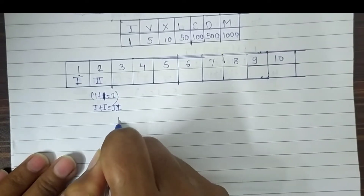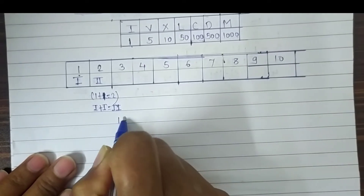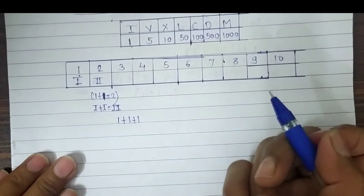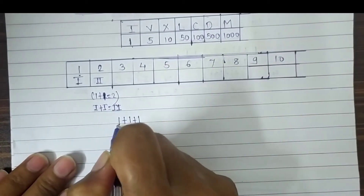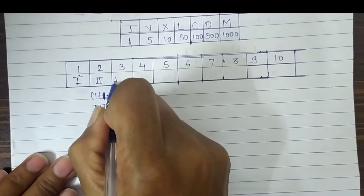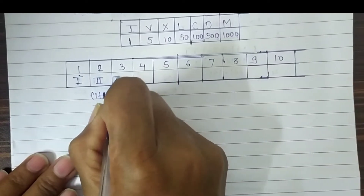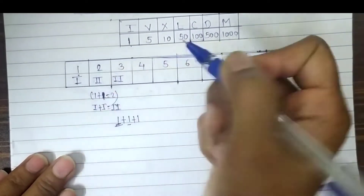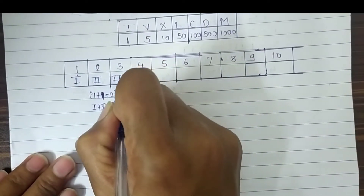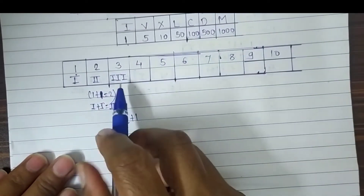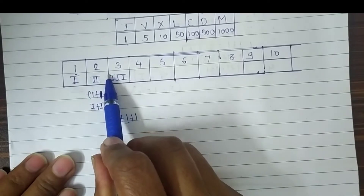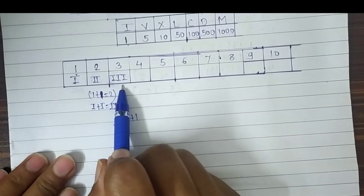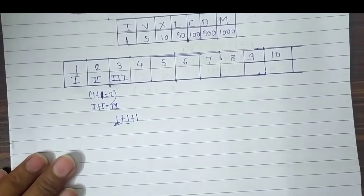For 3, we divide it as 1 plus 1 plus 1 equals 3. So we write three I's: first I for the first 1, second I for the second 1, and third I for the third 1. So 3 is written as III — three times I.